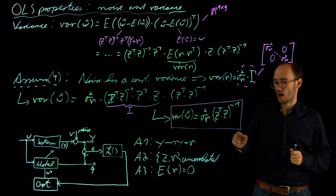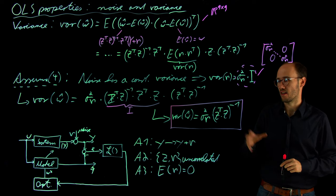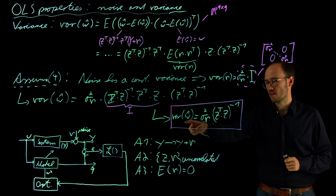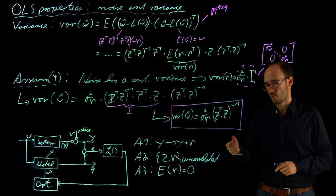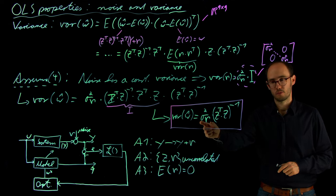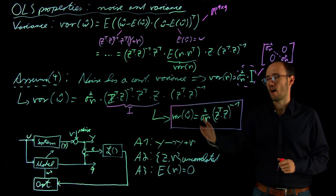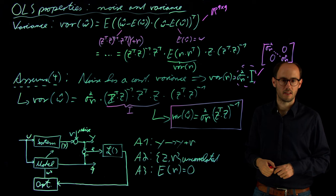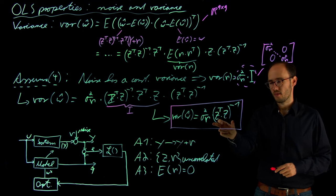This is the final result when we apply assumptions A1 to A4, with the fourth assumption being that the output measurement noise is constant. Looking at this result for the variance of the estimated parameter vector — that is, the level of uncertainty we have — we can find that it has two components. The first component is the level of output noise, represented by σ_ν².